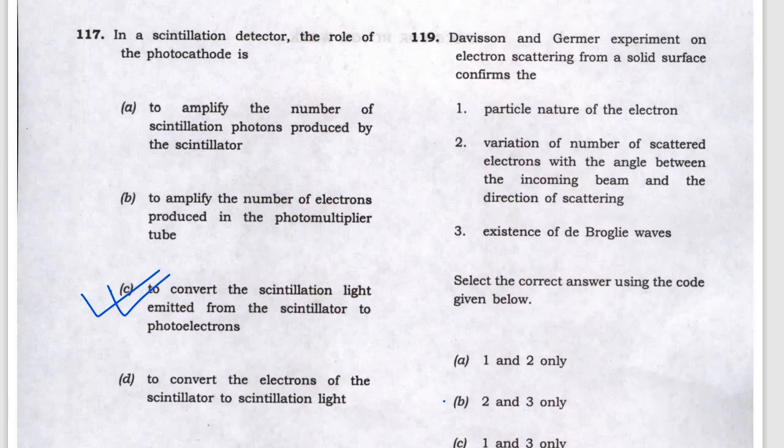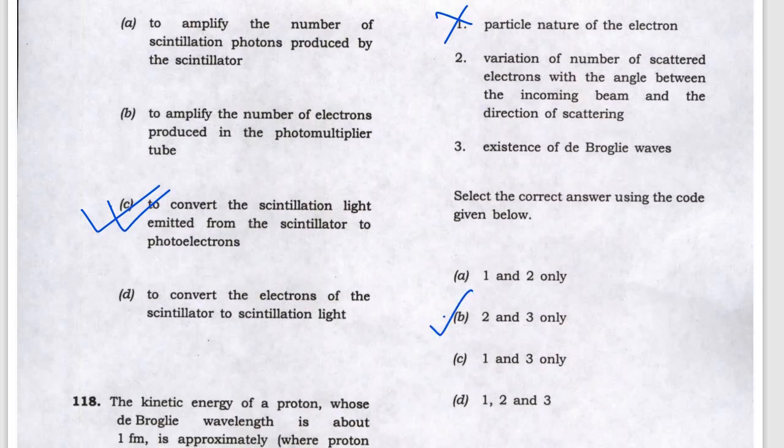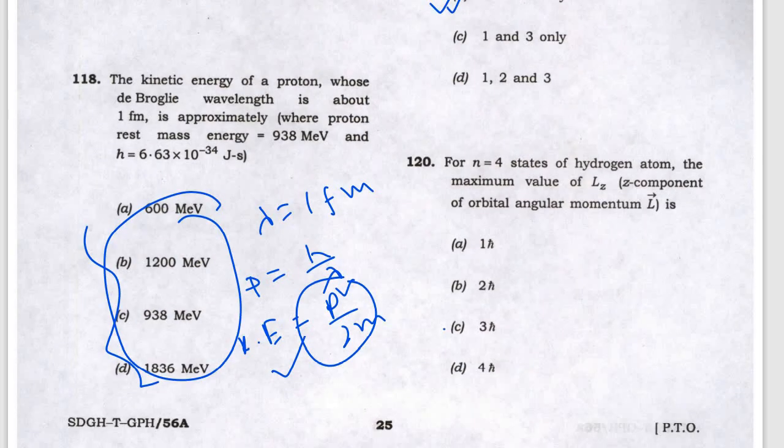Davis and Germer: it is not a particle, it's of wave nature, so A is not correct, so B is the correct one. For n equals 4, the L_z value is 3ℏ, so L_z equals that.